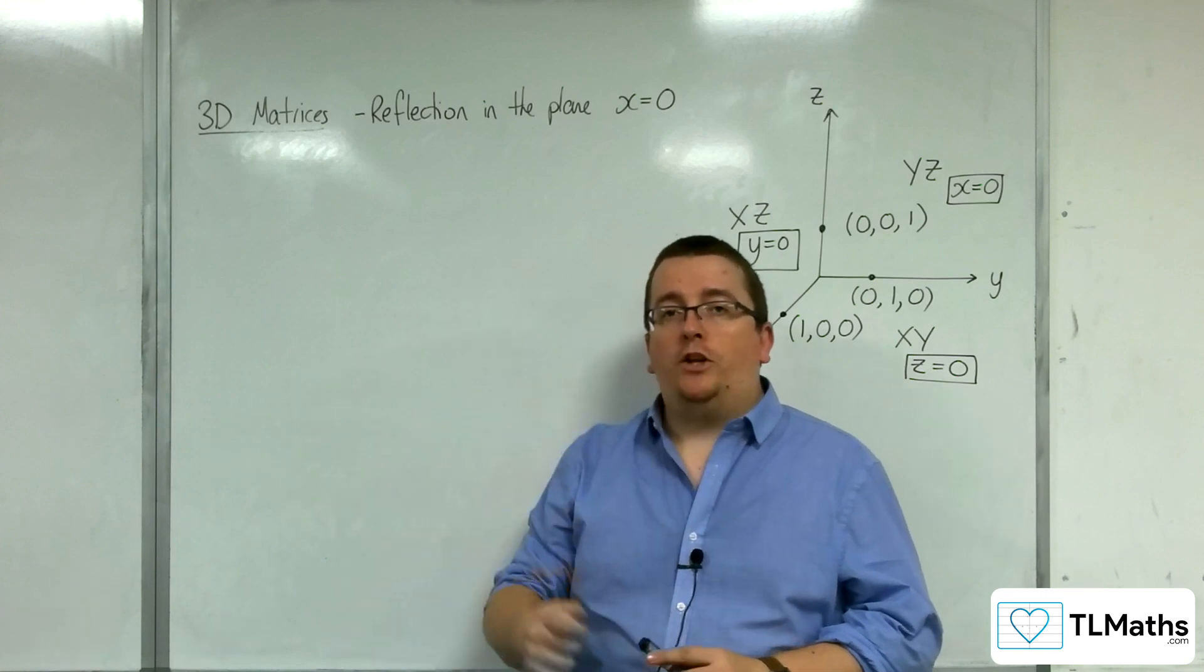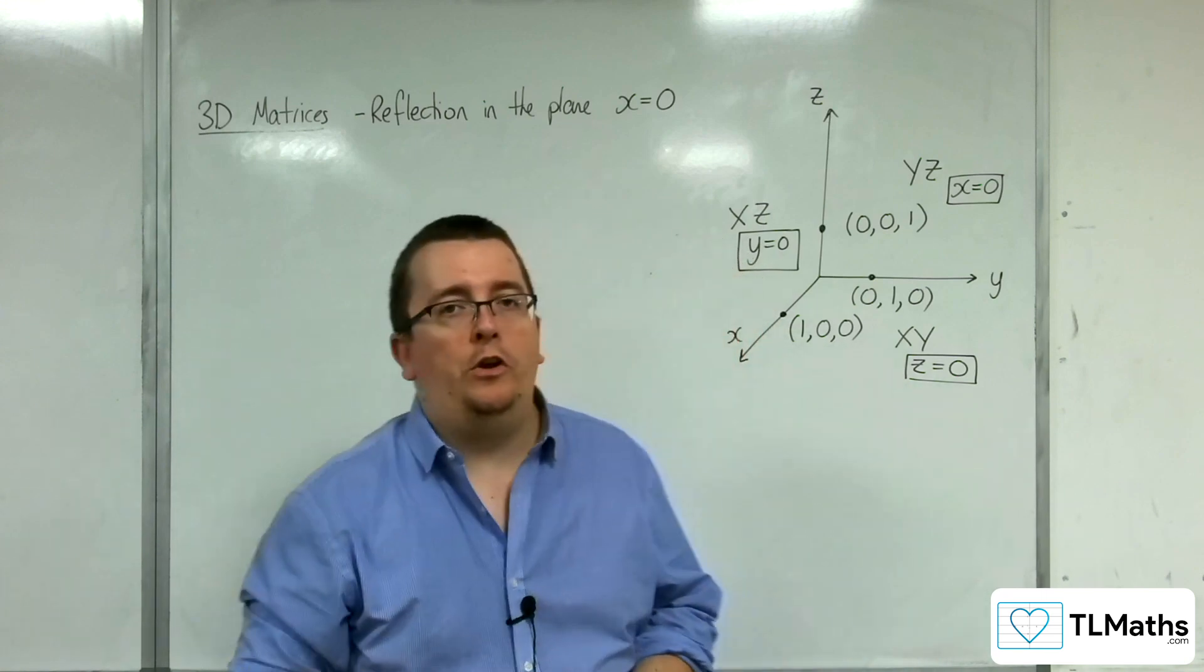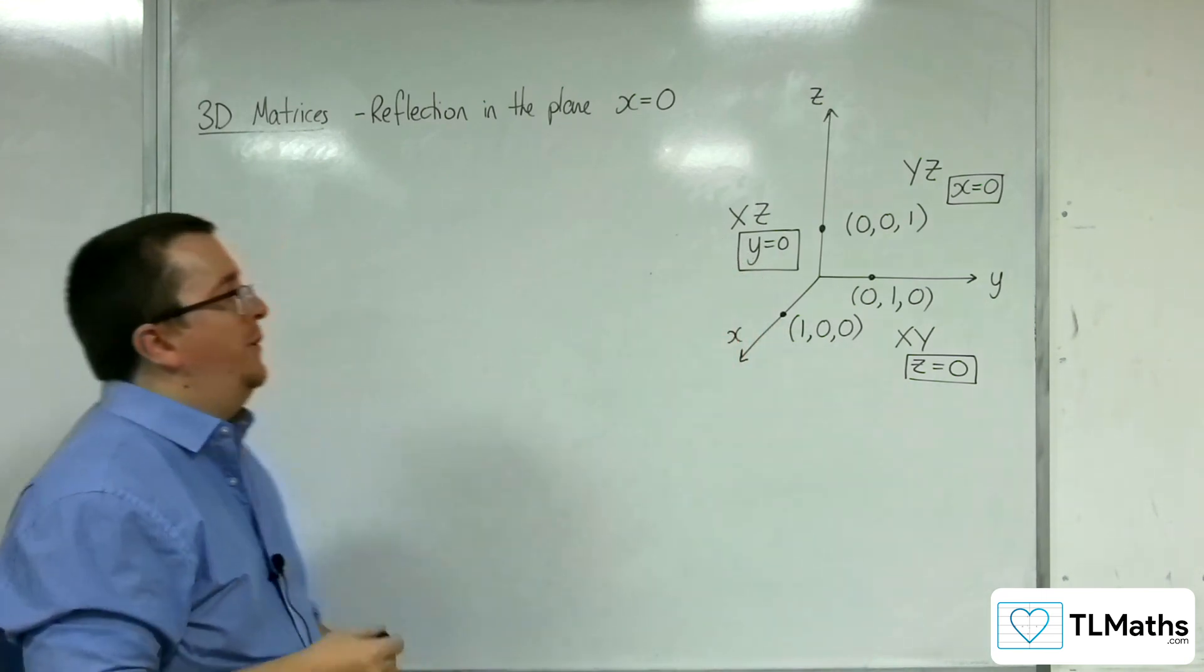In this video, we're going to look at a reflection in the plane x equals 0. What would that matrix need to be?